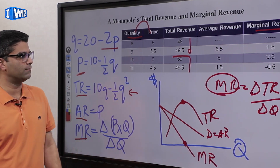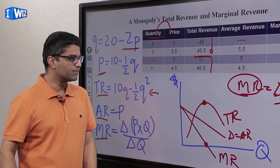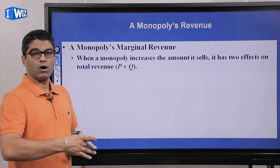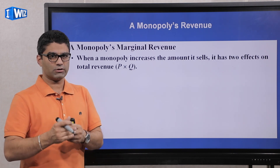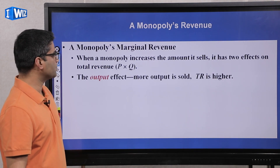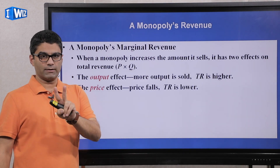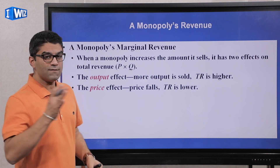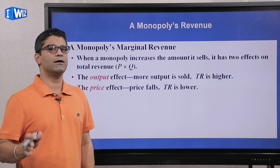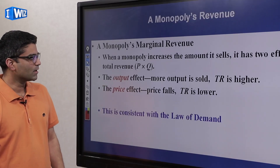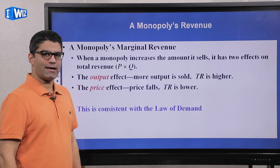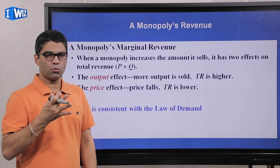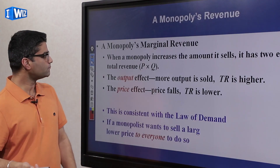When a monopolist produces more output, two opposing effects occur. They increase quantity, gaining revenue from selling to one more person. However, they also had to lower the price for everyone, losing some revenue on previously sold units. The law of demand states that to sell more quantity the price must fall — which is again different from perfect competition, where you are one producer out of millions and have no impact on the market price.